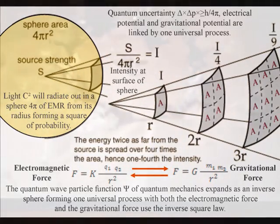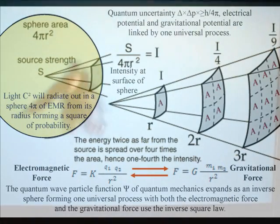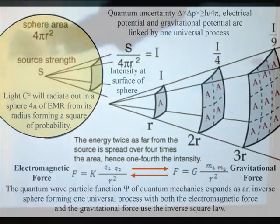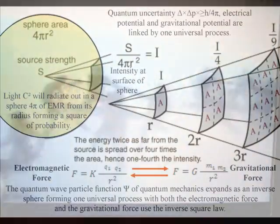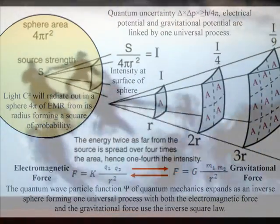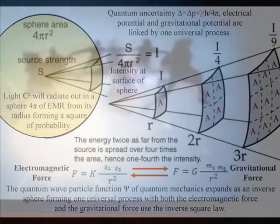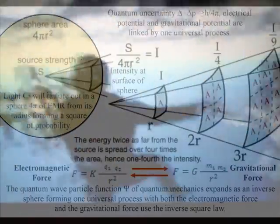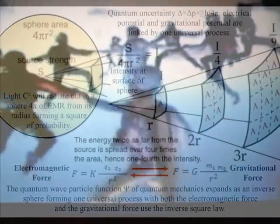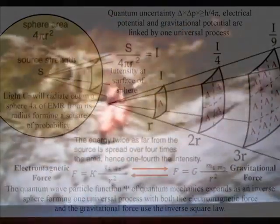There is no mysterious action at a distance. The gravitational field will work at the speed of light because it is an integral part of one universal process with the electromagnetic force. We have one universal process that begins with the quantum wave particle function, or probability function of quantum mechanics, expanding out as an inverse sphere and ends with the inverse square law of gravity and Newton's third law of motion.